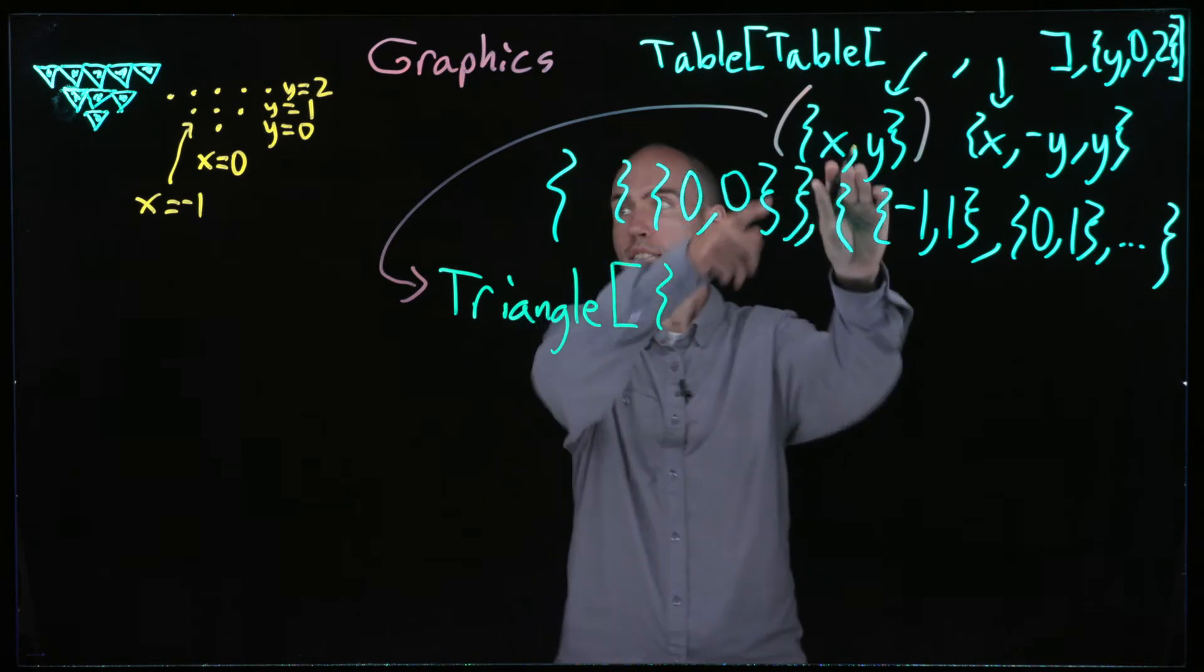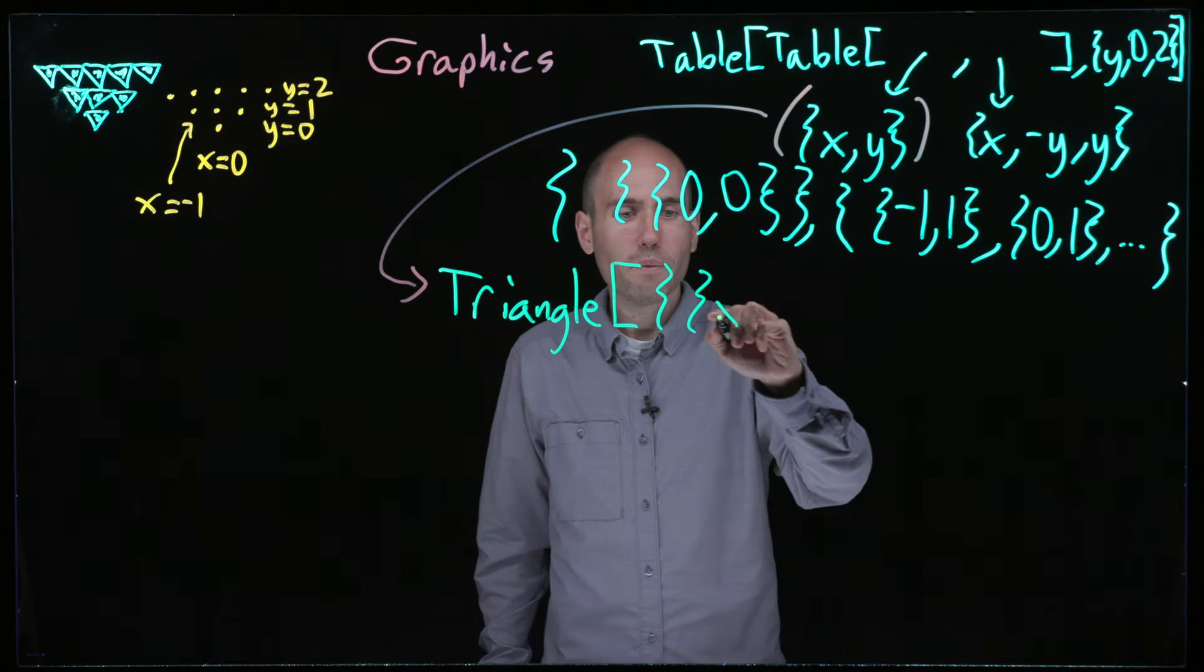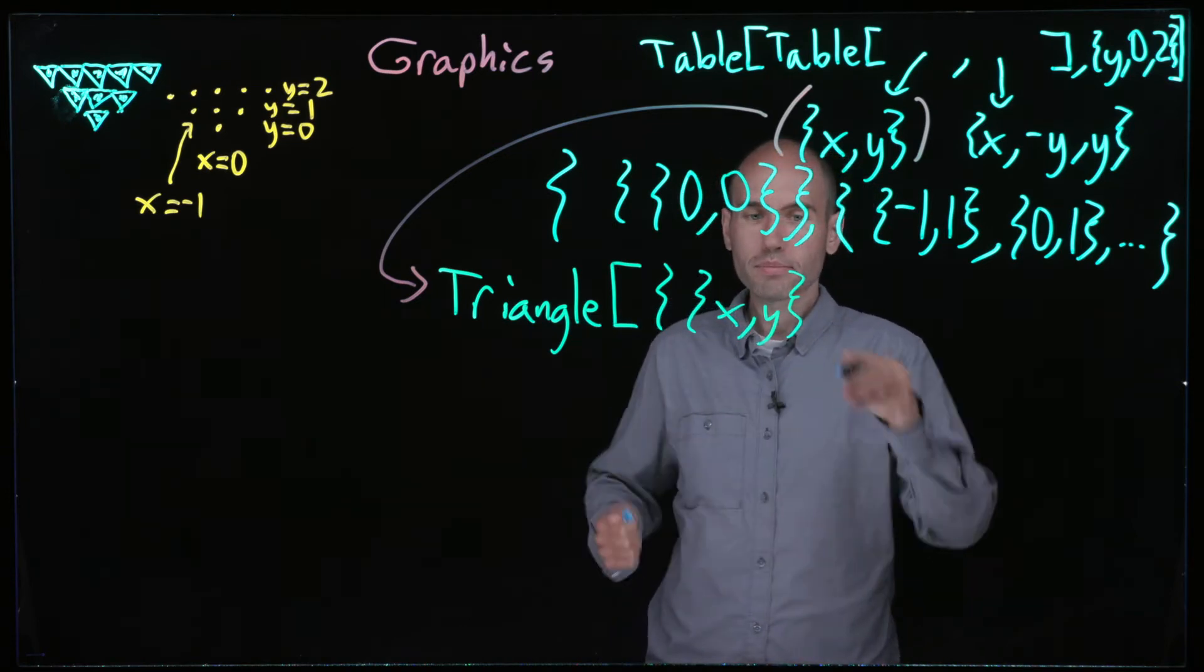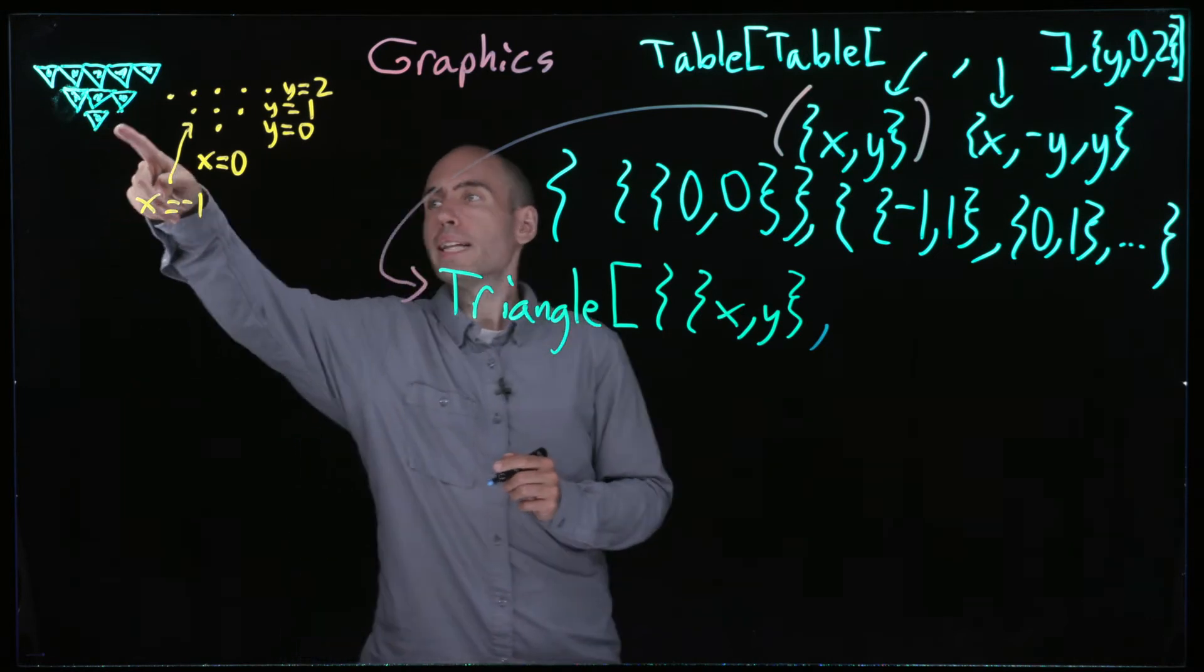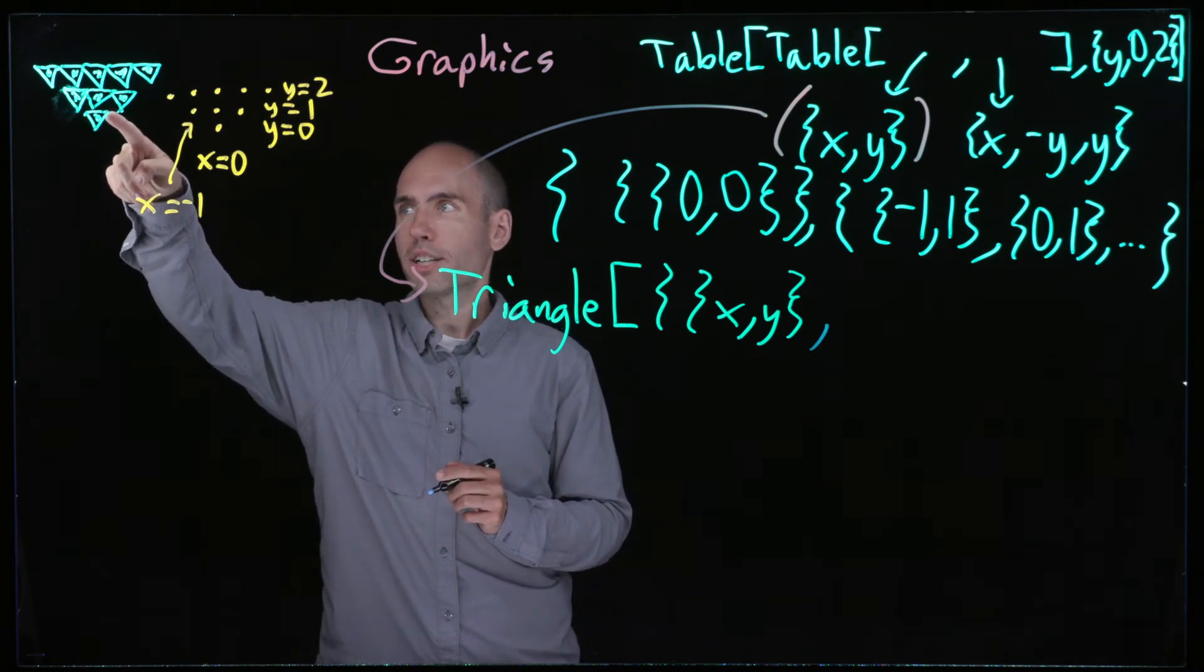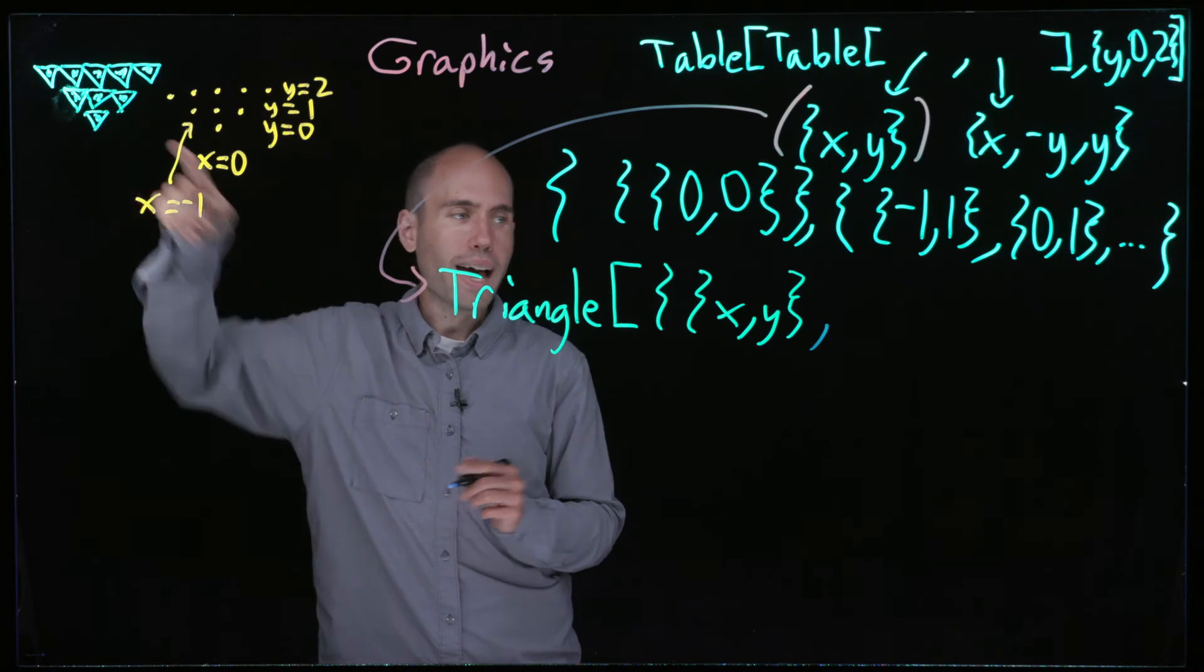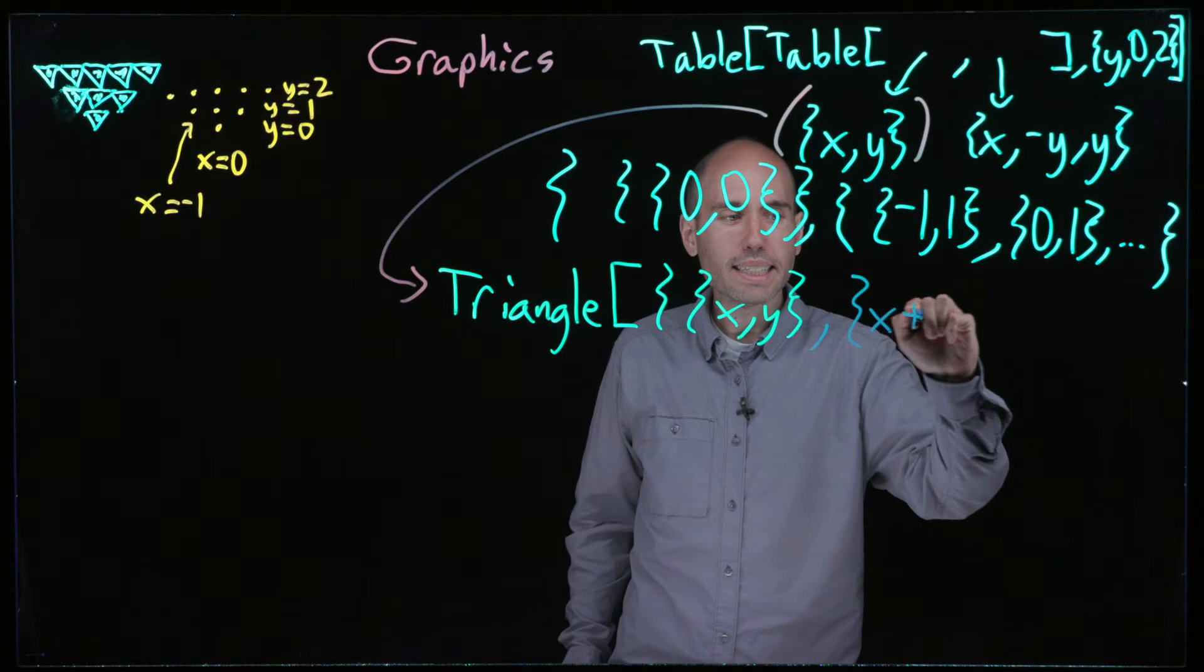Let's replace this with triangle. What's the syntax for triangle? Triangle takes as input a list of points, so my first point can just be this bottom one. Doesn't matter what order I go in, so x comma y. But having that one point is not enough. I also have to have two more points. What are the next points? Let's think about this one here, the lower most triangle.